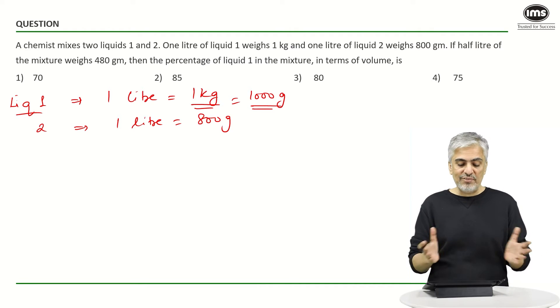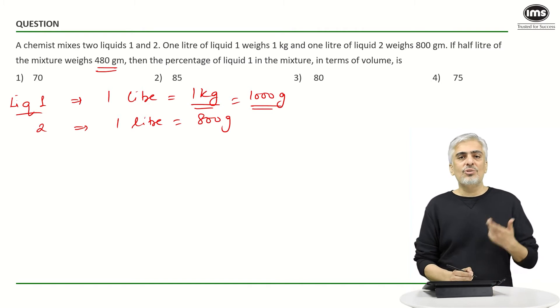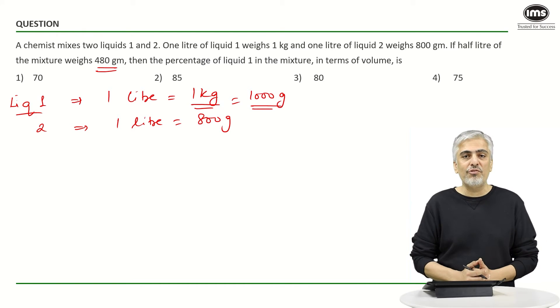Mixture means if I have mixed both of them and if I take only half a liter of that, it is 480 grams. So can I say if I take one liter of the mixture, that would have been 960 grams? So instead of doing it for half a liter, it would be easier for one liter.